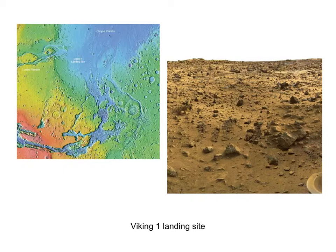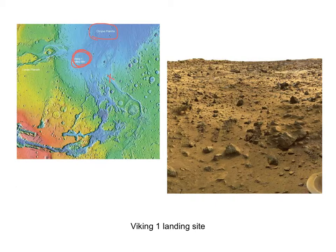The Viking 1 landing site was in Chryse Planitia, on the southern edge. Ares Vallis, where Pathfinder came down, is actually not that far away — again, an outflow plain. Taking a look at the site from Viking 1, what do you see?